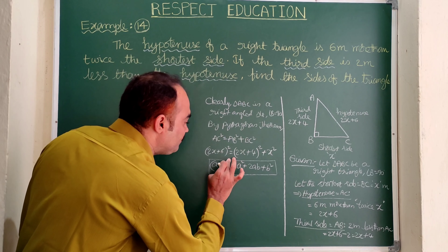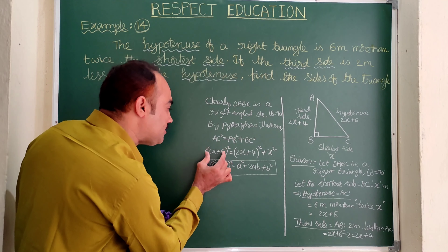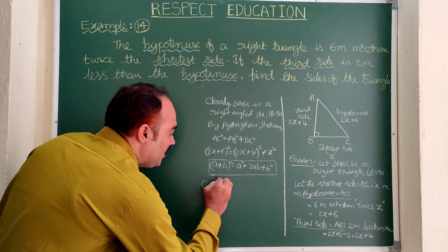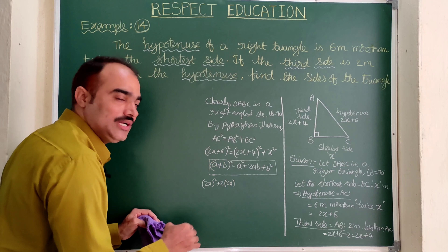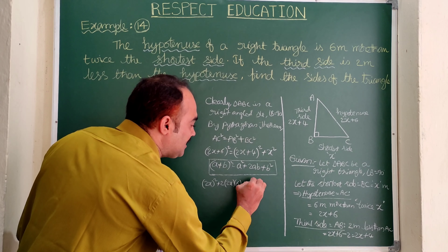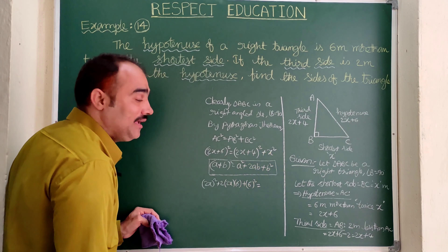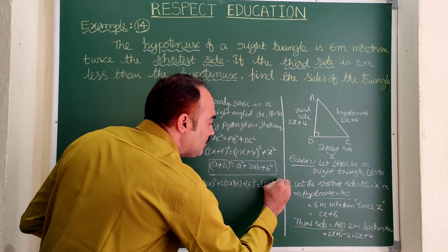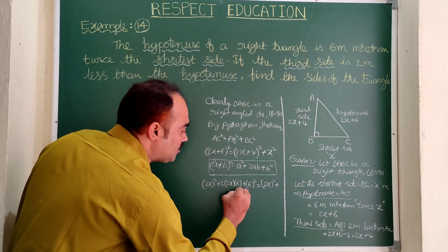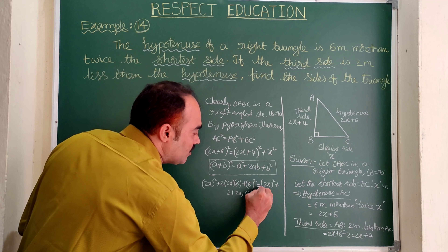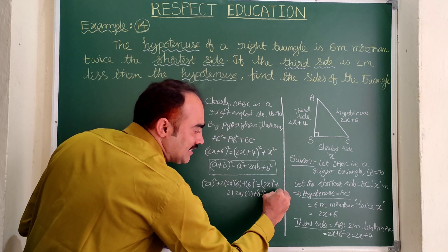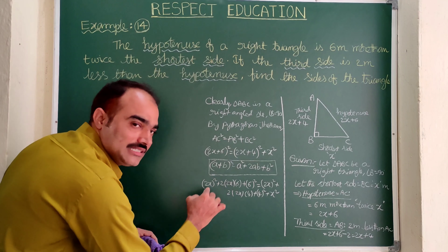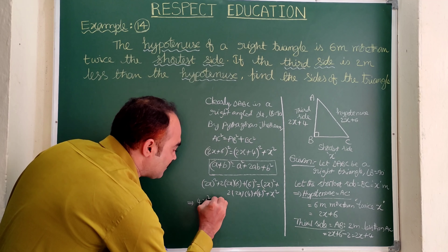Let us simplify using the formula (a + b)² equals a² plus 2ab plus b². Expanding the left side: (2x + 6)² gives 4x² plus 24x plus 36. Expanding (2x + 4)² on the right side gives 4x² plus 16x plus 16, and we write x² as it is.